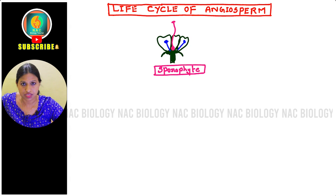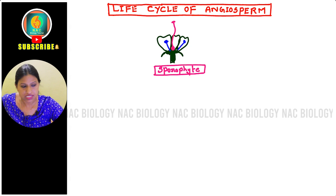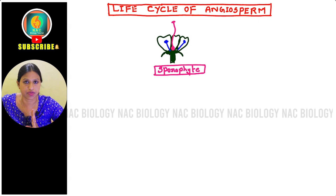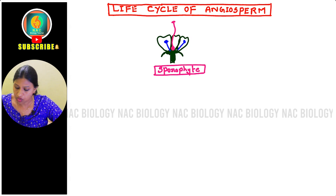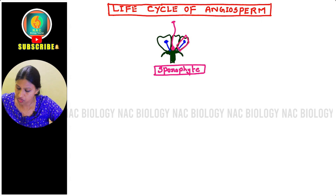Here you can see the sepals, the green parts, as well as the peduncle and thalamus. The corolla — the petals — is also present. In blue I have shown the stamen, which is the male reproductive structure, and in pink I have shown the pistil, the female reproductive structure. Now let me take out one stamen.